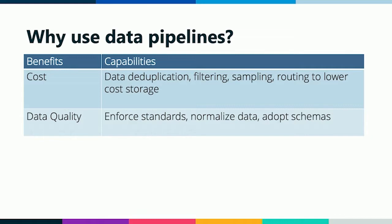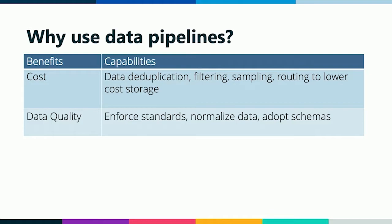Pipelines also help with your data quality. When you have an incident, you want your operators or software engineers to be able to get actionable insights right away — you don't want them finagling with the data to figure out what's happening. A pipeline helps by transforming data into something immediately useful. And since software from different teams may produce data that doesn't always look the same, we can normalize the data and apply schemas and standards.